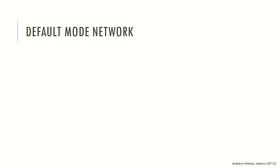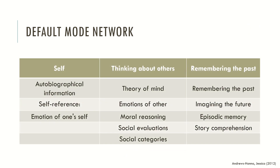We know that the default mode network may be the neural substrate of the self — the overall representation that we have about ourselves. The self has functions related to autobiographical information, self-references, emotions of oneself, thinking about others (sometimes called theory of mind), emotions of the other, moral reasoning, social evaluations, and social categories. The self also encompasses remembering the past, imagining the future (connected to episodic memory), and story comprehension. All these complex functions relate to the representation of ourselves, which may be seen as the concept of the self.